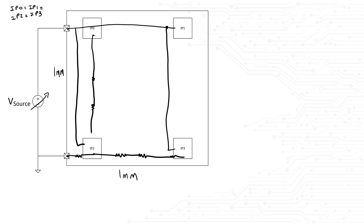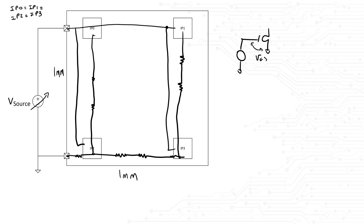The ground connections definitely have some limited resistance, and based on the amount of current traveling through those, they can lift the ground several millivolts. So if I use this voltage source to bias the gate of an NMOS, the VGS that it sees at one corner of the chip is going to be different than the VGS that it sees at the opposite corner.